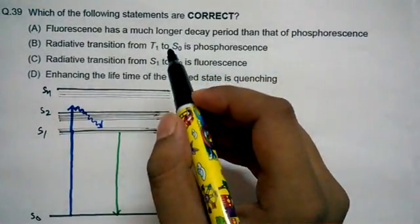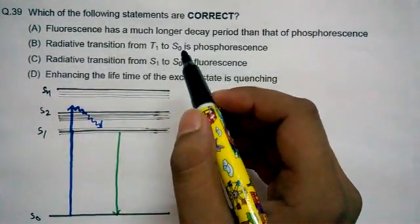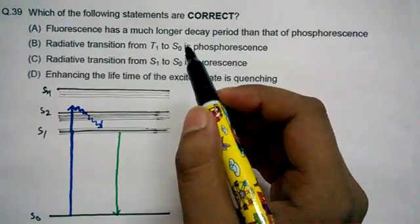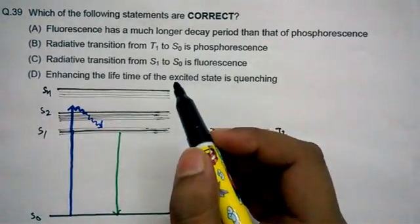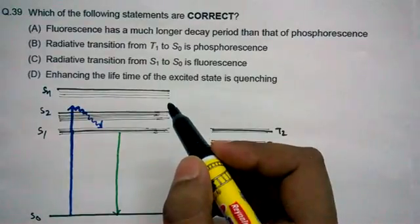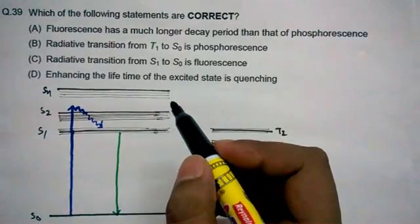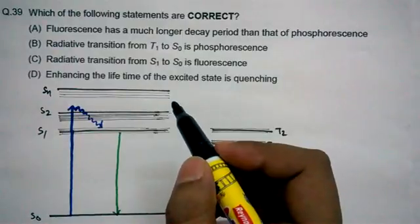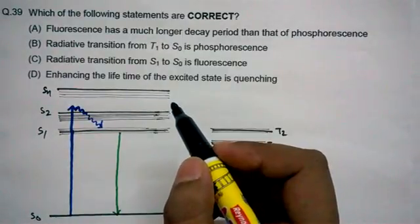Hi, in this video I'm going to solve a question from IIT JAM Biotechnology 2016. This question is on fluorescence, basically fluorescence versus phosphorescence. Before addressing this question, we should talk a little bit about fluorescence and phosphorescence and the basic mechanism of these two.